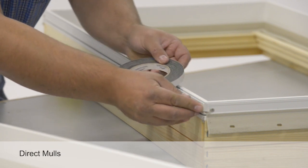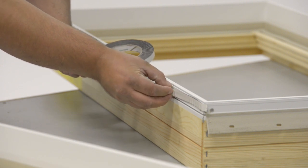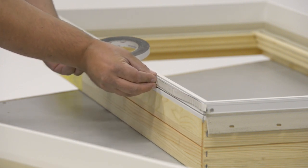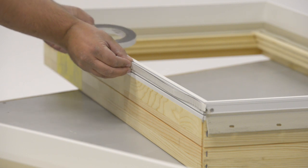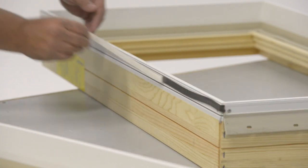Direct mulls. Apply mull tape to the cladding. Make sure it is near the exterior edge of the cladding and extends past the ends and wraps around the corner by about an eighth of an inch, then remove the paper backing.